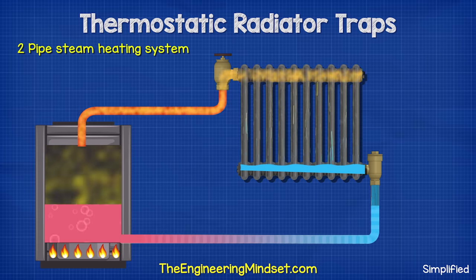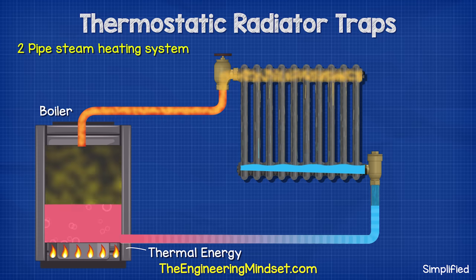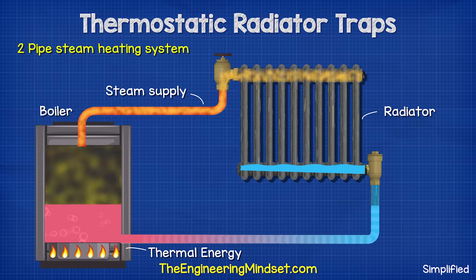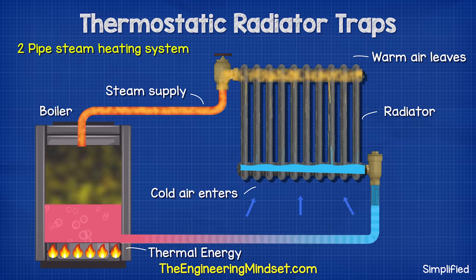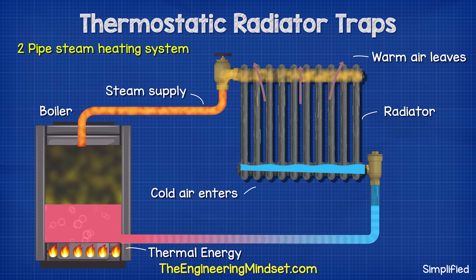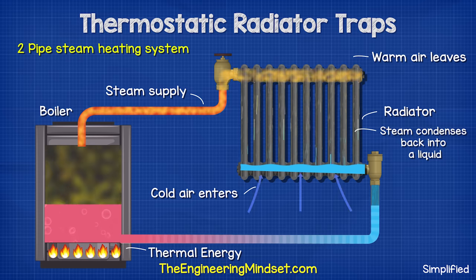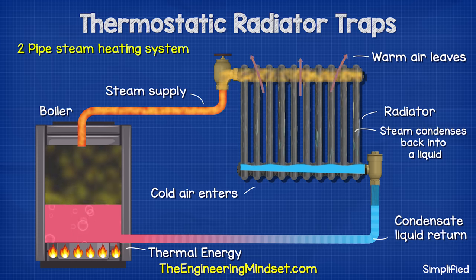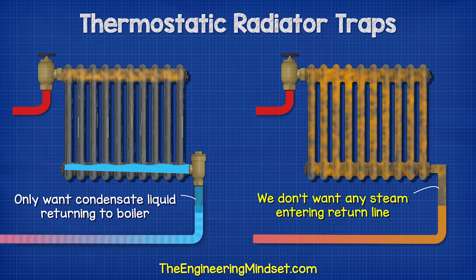In a typical two pipe steam heating system, the boiler adds thermal energy and heats the water, turning it into steam. The pressure pushes the steam along the pipe and into the radiator. The radiator heats the ambient air of the room — thermal energy transfers from the steam through the radiator wall and into the air. As air is heated it rises and cooler air rushes in to take its place, repeating continuously. As the steam gives away its thermal energy, it condenses back into a liquid, which is pushed by the high pressure back to the boiler to be reheated.